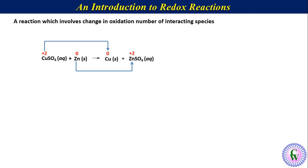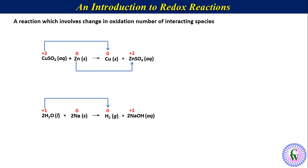Let's have another example: the reaction of water molecule with sodium metal to produce hydrogen gas and sodium hydroxide. On the reactant side, the oxidation number of hydrogen is plus 1 while that of sodium is 0. The oxidation number of hydrogen changes from plus 1 to 0, and that of sodium from 0 to plus 1. So this is also an example of a redox reaction.